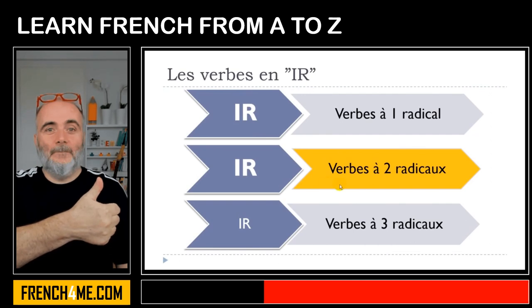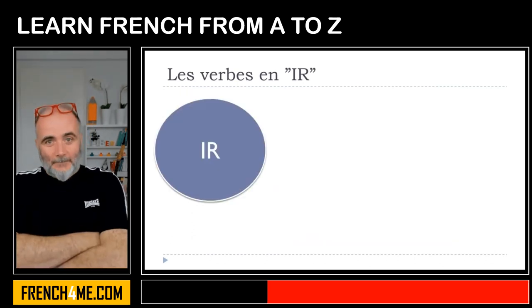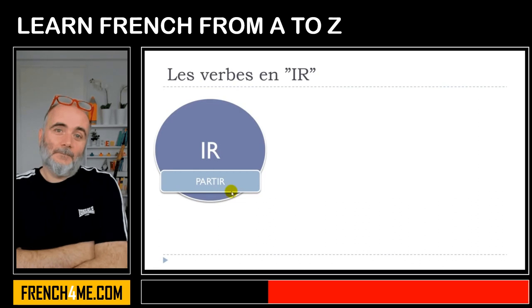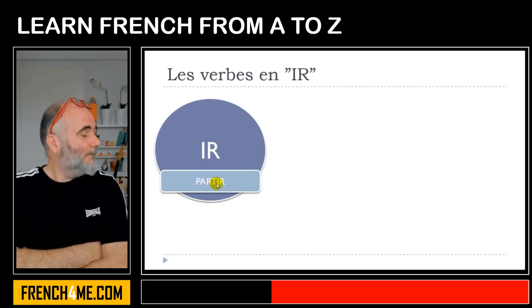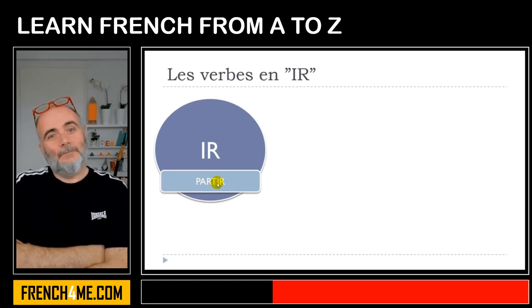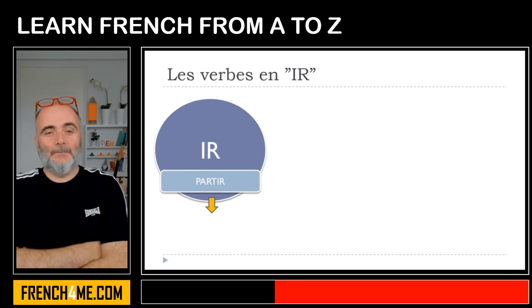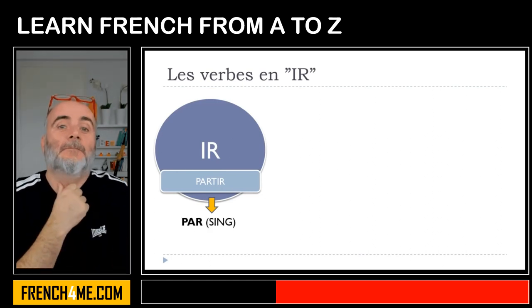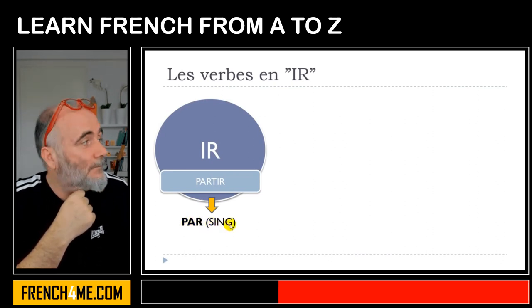Now let's see the second group — what we call les verbes à deux radicaux. We'll take partir. Partir means to leave — we use this verb quite often. It's quite important to see how to conjugate it at the present form. As I said, the idea is that we will have two different roots, two different stems. The first one will be PAR, for the singular form — so we're talking about je, tu, il, and elle.